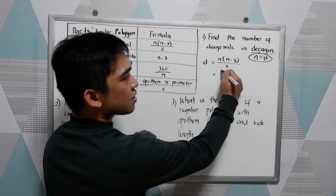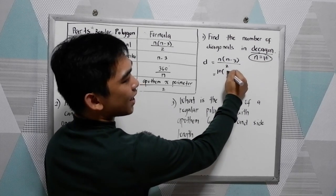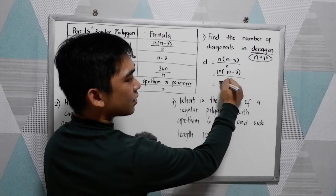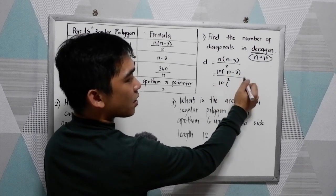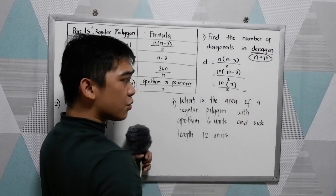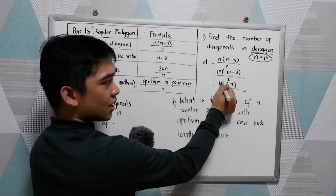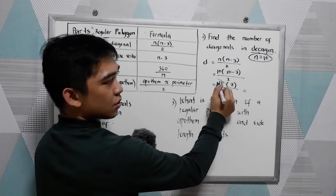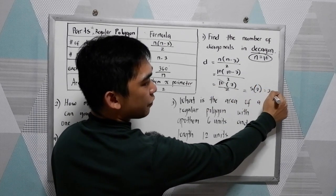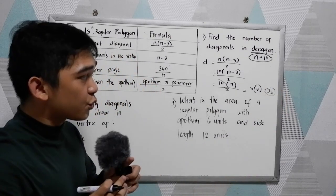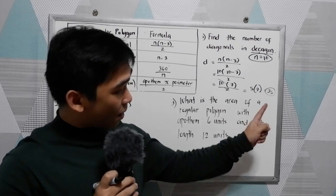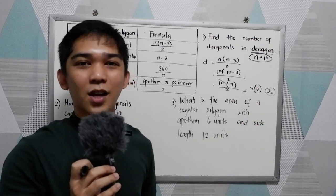Our n is 10, so substituting: 10 times (10-3) all over 2. We have 10 times 7 all over 2. Using the cancellation method, we can cancel 10 and 2, so this becomes 5 times 7, which is 35. So if you draw all the diagonals in a decagon, you will come up with 35 diagonals.